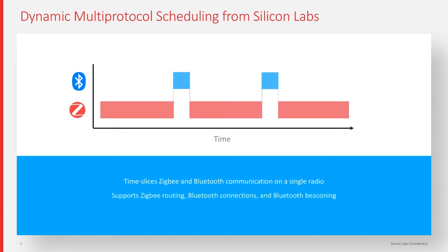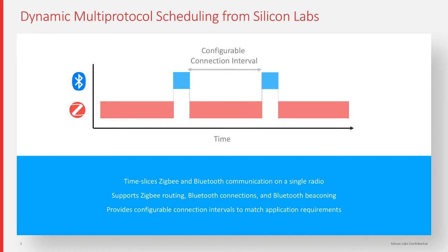In addition to Zigbee routing, Silicon Labs dynamic multi-protocol technology supports Bluetooth connections and Bluetooth beacons. The protocol connection interval is configurable to match application requirements. For Bluetooth beacons, the radio only needs about 1 millisecond to transmit a beacon, and the connection interval between beacons is typically no shorter than 100 milliseconds.